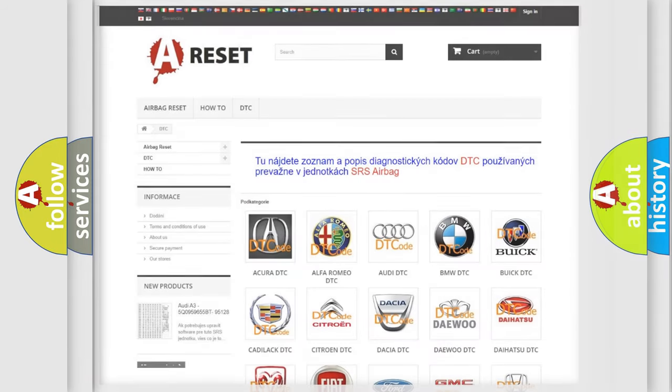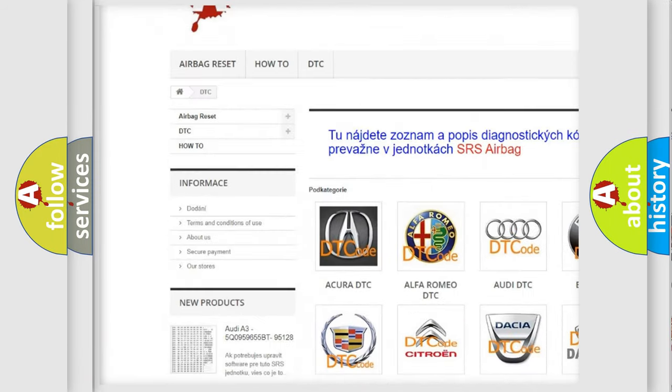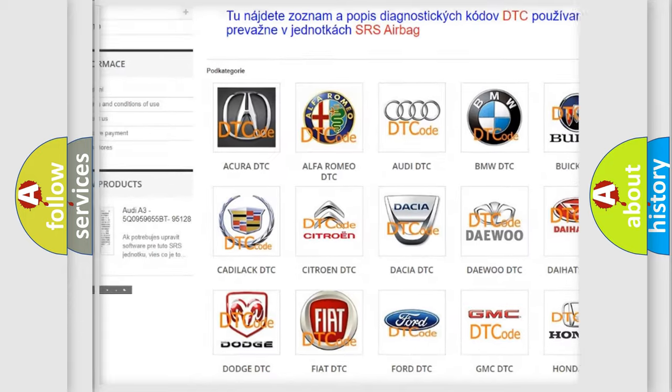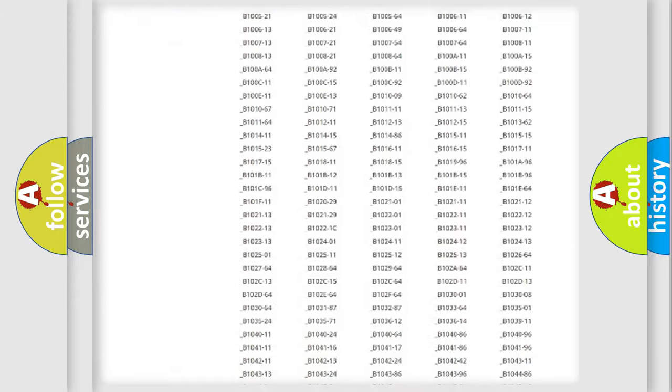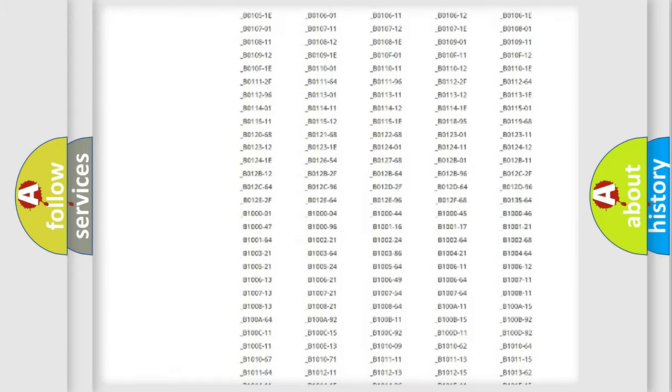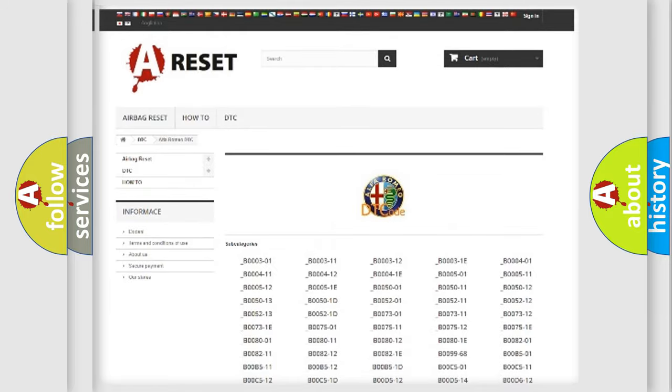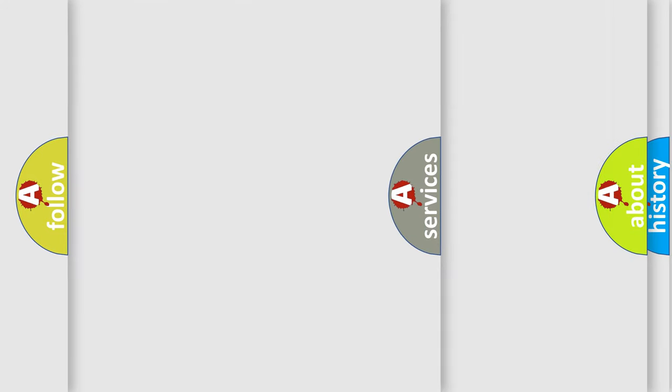Our website airbagreset.sk produces useful videos for you. You do not have to go through the OBD2 protocol anymore to know how to troubleshoot any car breakdown. You will find all the diagnostic codes that can be diagnosed in a car, Alfa Romeo vehicles,